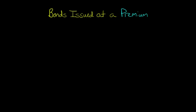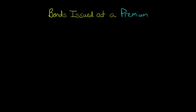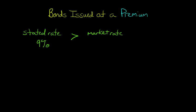In this video we're going to talk about how to account for bonds issued at a premium. In case you're wondering what a premium is or why a bond would ever be issued at a premium, the basic reason is that the stated rate of interest on a bond — the amount used to determine the interest payments — let's say 9%, is greater than the prevailing market interest rate at the time of issuance.